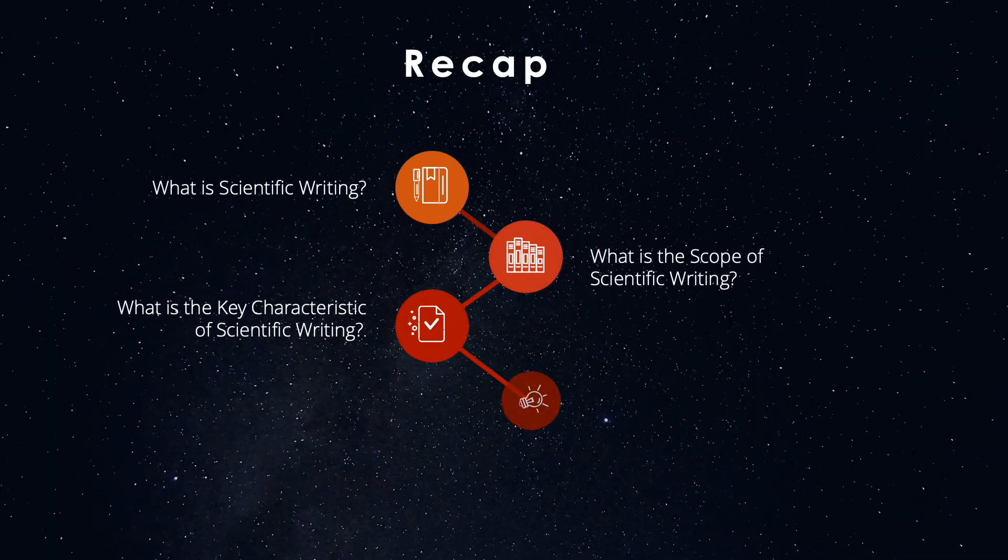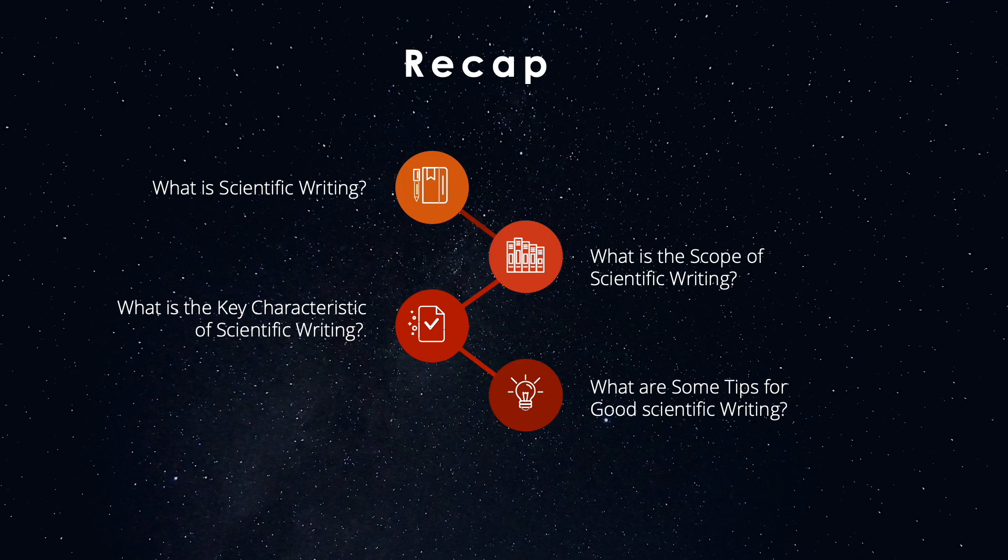To recap, in this video we looked at the definition of scientific writing and its scope, the key characteristic of scientific writing, which is clarity, and three important tips for good scientific writing, which are being concise, being organized, and using simple language.